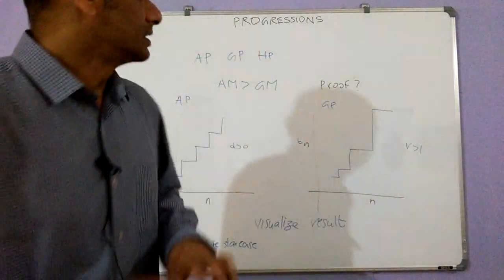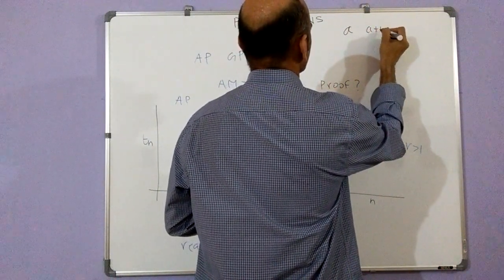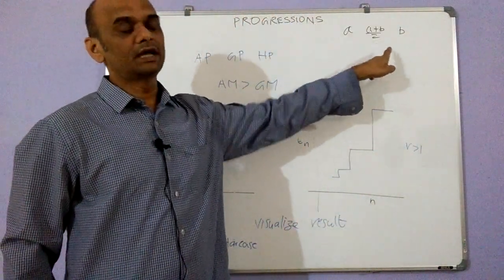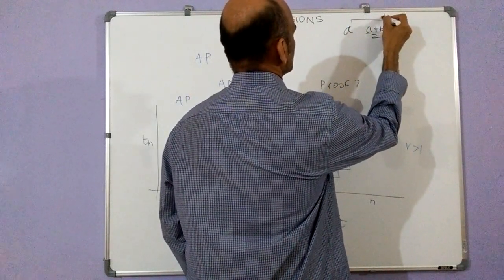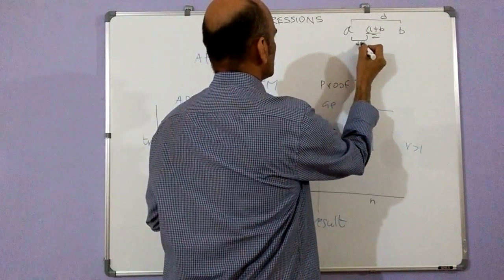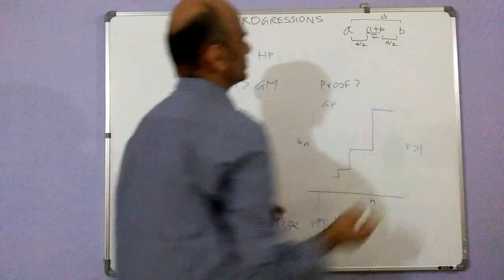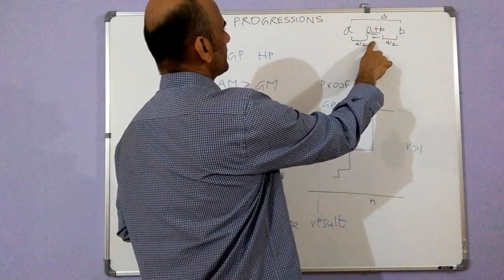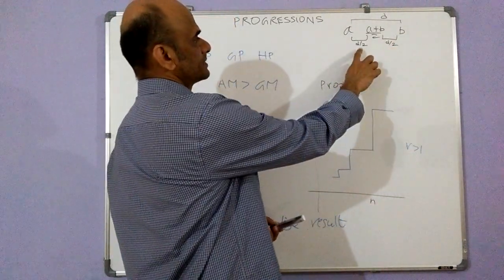One important thing to realize is that the number a, then the arithmetic mean (a + b) / 2, and then the number b — these will follow arithmetic progression. The difference between a and the arithmetic mean is d/2, and similarly the difference between the arithmetic mean and b is also d/2. So a, the arithmetic mean, and b form an arithmetic progression with common difference d/2.